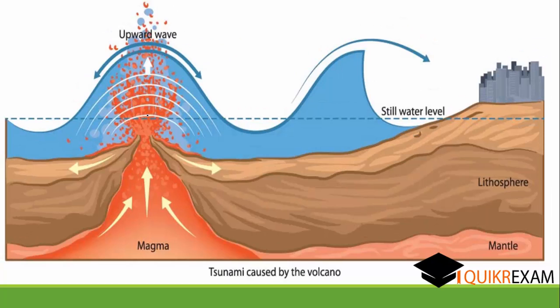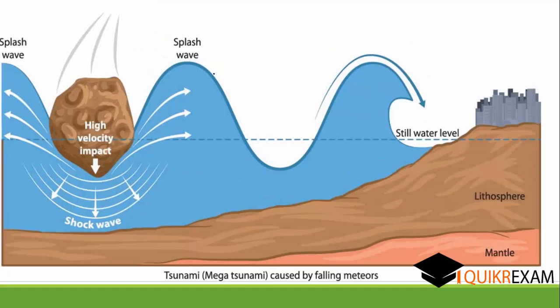The next reason is a volcano. When there is any volcano under the sea, it pulls the water in the upward direction. The wave then travels toward the harbour, and due to the shallowness of the harbour, a tsunami is generated.